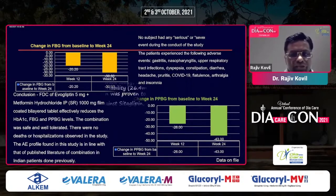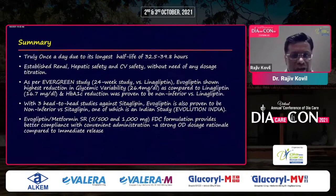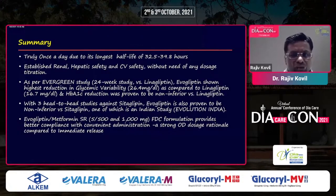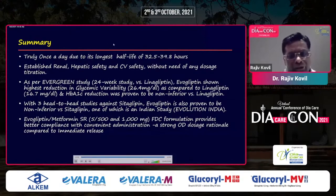In summary: evogliptin is truly once-daily due to its long half-life; it has safety in kidney, heart, and liver — the triangle we look at. The Evergreen study shows the highest reduction in glycemic variability. HbA1c was non-inferior to linagliptin as well as sitagliptin in an Indian study. The FDC provides better compliance with convenient once-daily dosing. Thank you all for your patient hearing and thank you to the organizing committee including Dr. Sabu for the invitation.